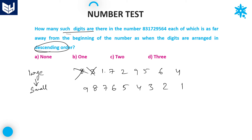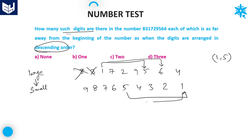Now 1 and 7 — no. 1 and 2 — no. 1 and 9 — no. 1 and 5 — 3 digits here, and also 3 in descending — yes, that is 1 pair. 1 and 6 — 4 digits here, and also 4 in descending — yes, that is 1 pair. 1 and 4 — no. Next, 7 and 2 — no. 7 and 9 — 1 digit here, and also 1 digit in descending — yes, that is 1 pair. 7 and 5 — no. 7 and 6 — no. 7 and 4 — no.